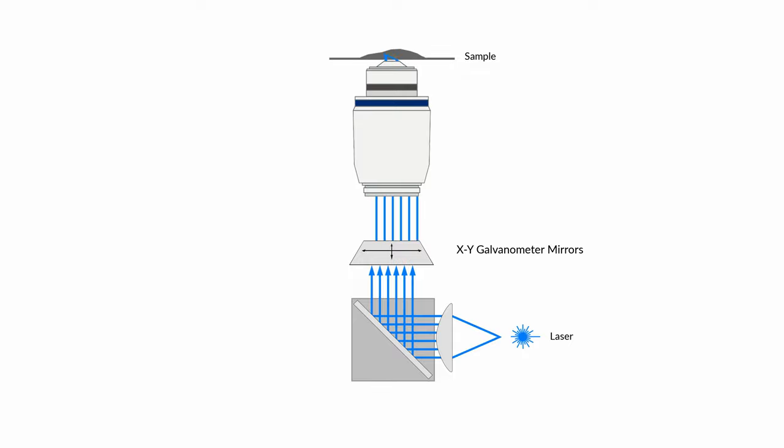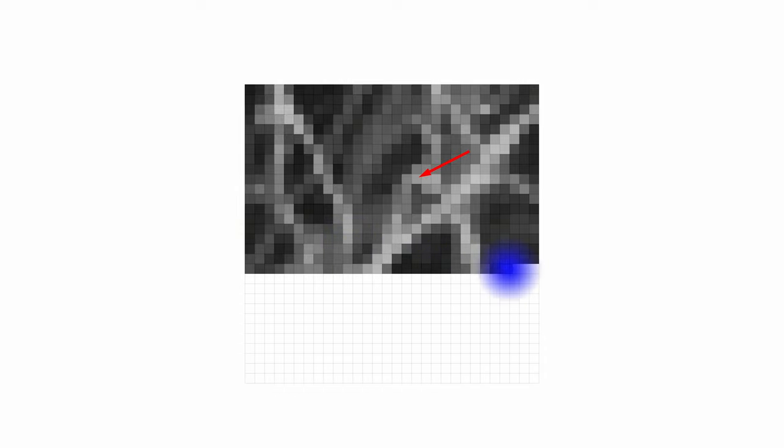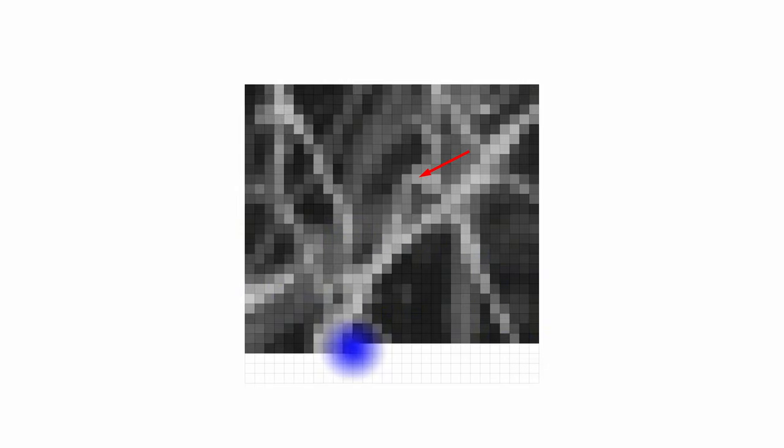So while the scan is progressing, areas that are not currently being sampled will not be illuminated. The emission signal collected by the objective will pass through the scanners from the opposite direction on its way to the pinhole and detector. As the emission signal exits the scanners, it becomes stationary, referred to as descanned, which makes it easier to align the emission and pinhole optics in the optical path. As the illumination laser passes over each region, a detector records the amount of fluorescence emission light at each location and then maps that signal as an intensity value to a pixel located in the corresponding region of our final image.